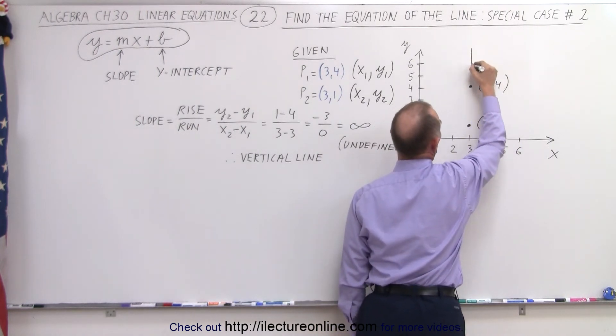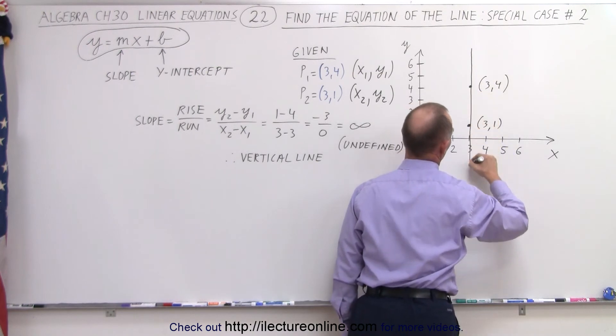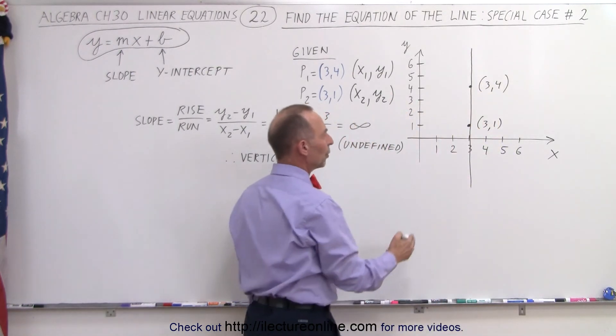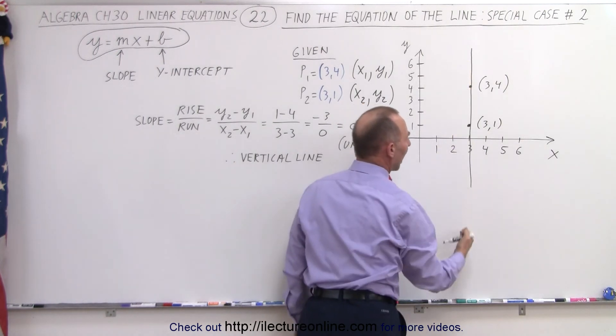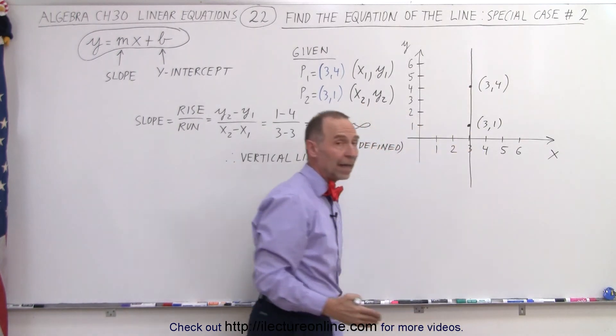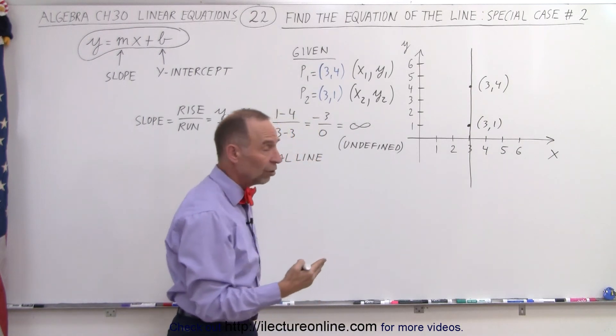And notice when we connect those, we have a line, and we see that the line goes through the point x equals 3. Matter of fact, every point on the line has x equals 3, which means that is the definition of that line.